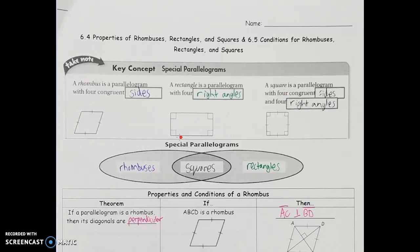So if I'm trying to classify them, a square is considered both a rhombus and a rectangle. If I have four right angles, that's a rectangle. If I have four sides that are congruent, that's a rhombus. And if I have both, that's going to be a square.